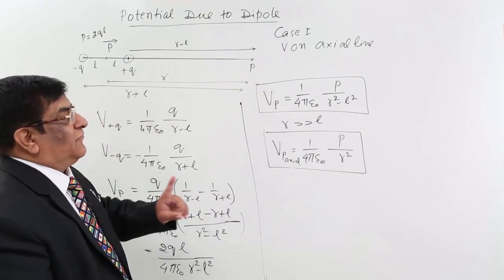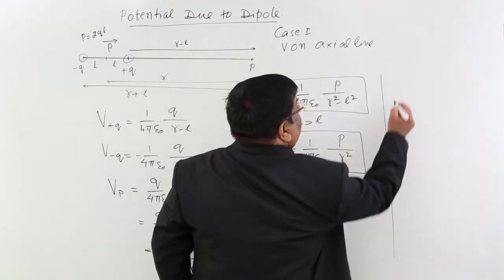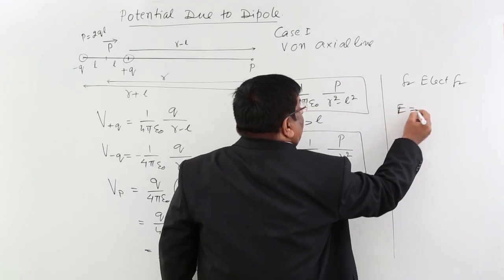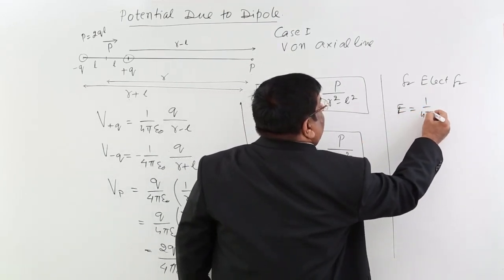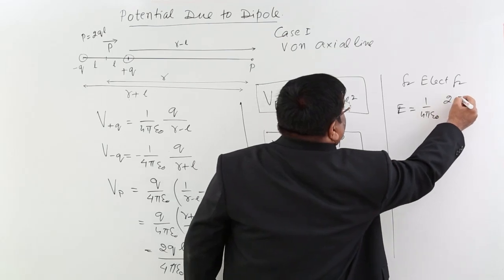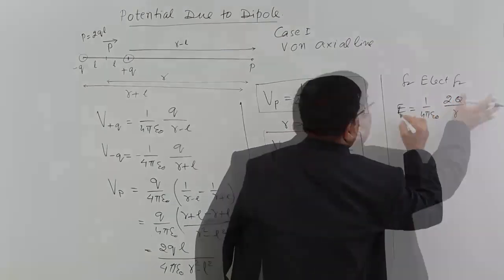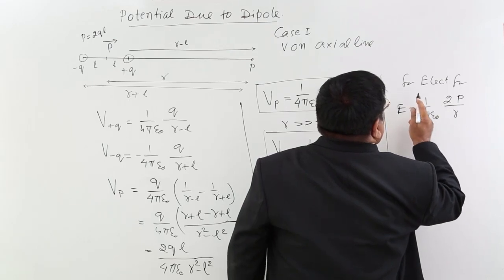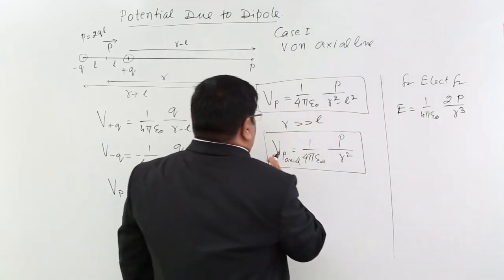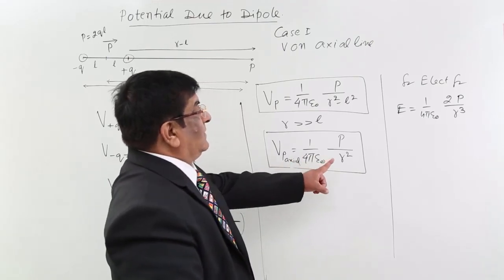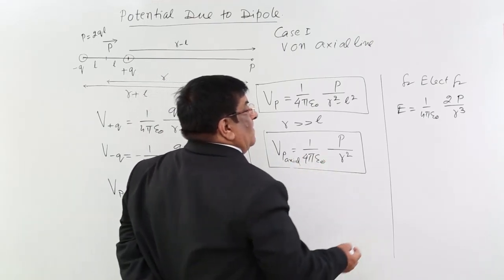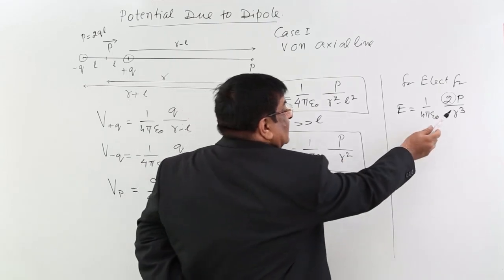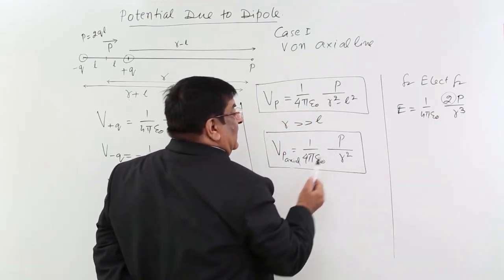Now recall the formula for electric field at distance R due to a dipole on the axial line: E = (1/4πε₀) × 2P/R³. Comparing the two: for electric field, the numerator has 2P and the denominator is R³, whereas for potential, the numerator is P and the denominator is R². So the electric field goes as 1/R³ while the potential goes as 1/R².